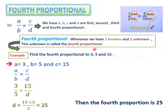Whenever we have three knowns and one unknown, this unknown is called the fourth proportional. Let us take an example. We are going to find the fourth proportional to 3, 5 and 15. Then, a is equal to 3, b is equal to 5, and c is equal to 15. We write a over b equals c over d. We replace a by 3, b by 5, c by 15, and we keep d as the unknown. Then, we cross multiply 3 by d and 15 by 5. So, d is equal to 15 times 5 over 3, which equals 25. Then, the fourth proportion is 25.